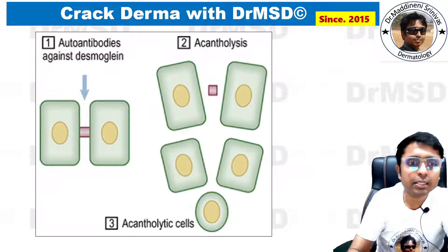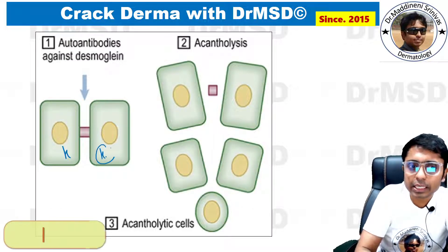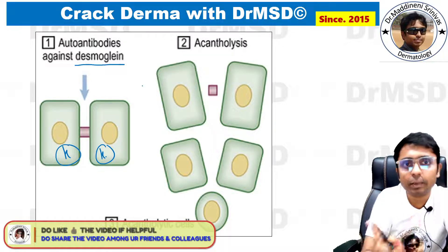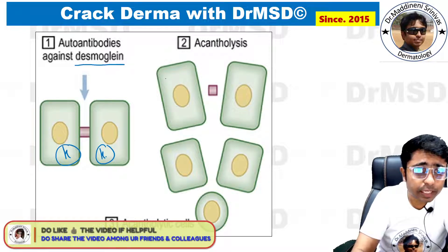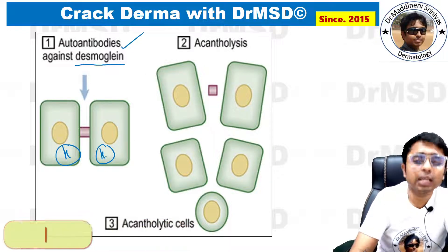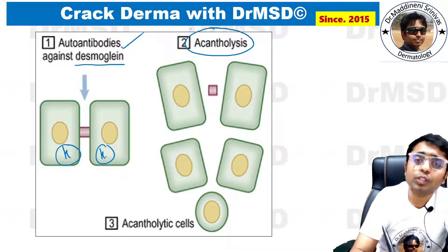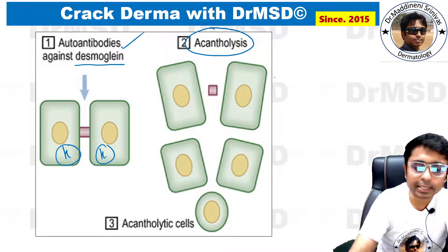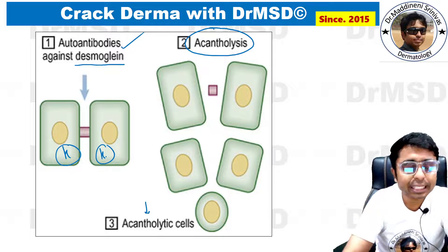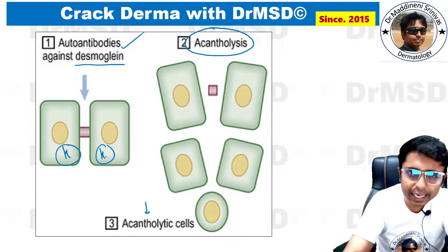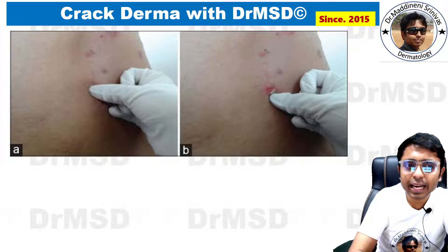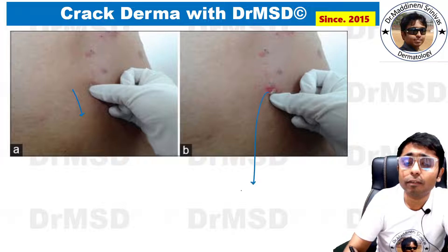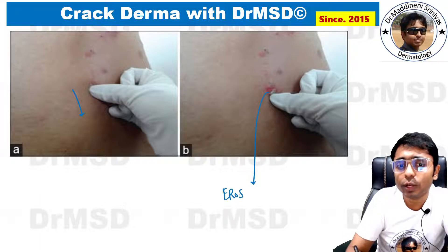What is acantholysis? In the epidermis, keratinocytes are the cells which are predominantly present, and desmoglein will help in attaching these keratinocytes to each other. There are some conditions where there will be auto-antibodies against desmoglein, and because of this destruction of desmoglein, there is going to be separation of the keratinocytes, which is called acantholysis. Clinically, we can identify this when we apply tangential pressure over the skin surface — there is going to be peeling off of the skin, forming an erosion.